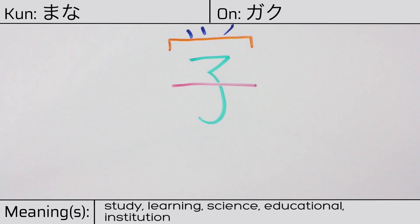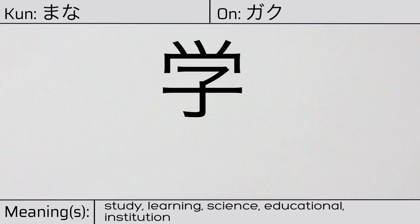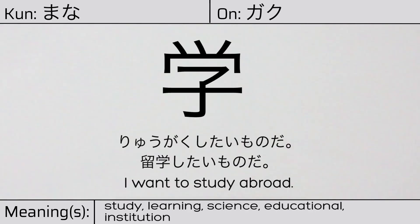You can remember this kanji by the following hint: Child learning something at school. Our example sentence is: 留学したいものだ. I want to study abroad.